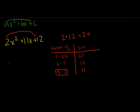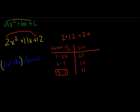So we rewrite the expression as 2x squared plus 8x plus 3x plus 12. Now we group the first two terms together and the second two. For the first group, 2x squared plus 8x, the greatest common factor is 2x. Pulling out 2x leaves us with x from the first term and 4 from the second term.